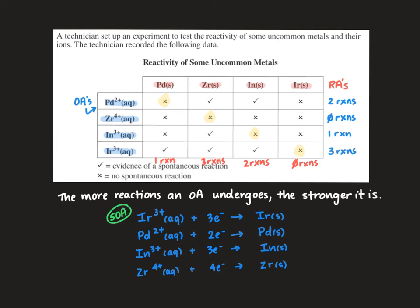So the strongest reducing agent in this case is actually zirconium, which is found at the bottom right of our table.